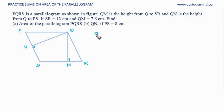So first let's find area of parallelogram: base into height. In this case base is SR. SR is given as 12, and height is QM. QM is 7.6 cm.